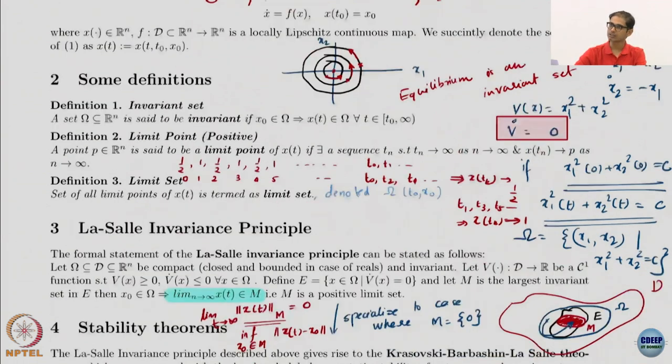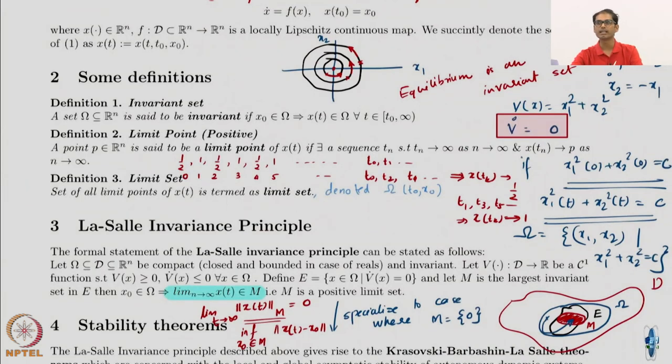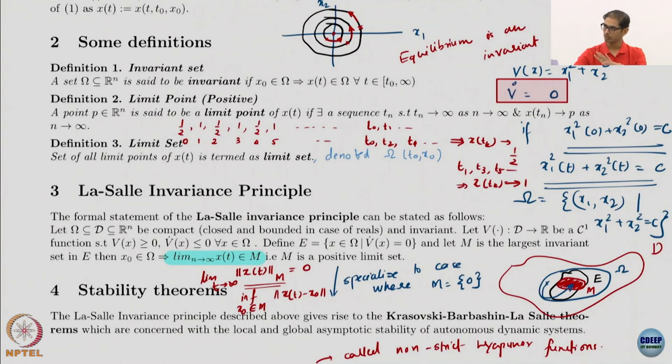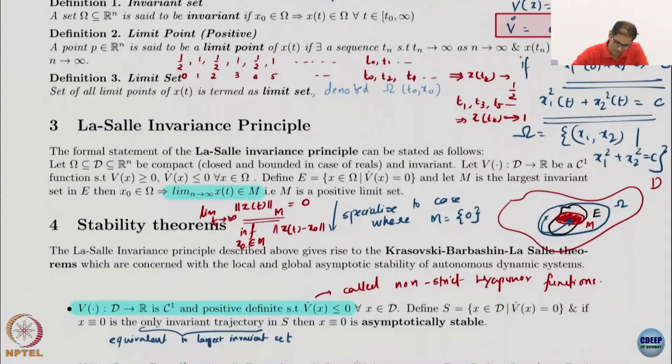So circle is a closed set, so it is a compact and invariant set. It is the kind of set we want for LaSalle invariance.